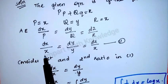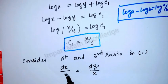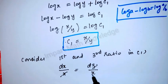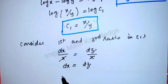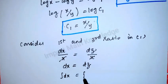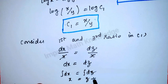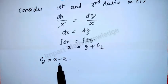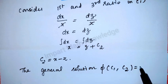For finding the next constant, select the first and third ratio: dx/x = dz/x. Cancelling the like terms, dx = dz. Integrating this, the integral of dx equals the integral of dz plus constant c2, so c2 = x − z.